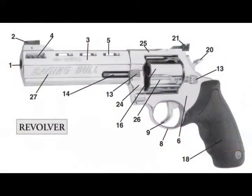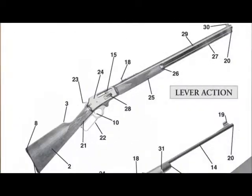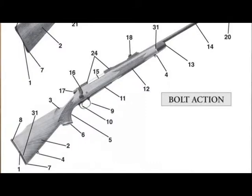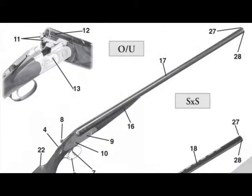A pictorial anatomy of firearms is also included. All the components of a revolver, semi-auto pistol, lever action rifle, bolt action rifle, semi-auto shotgun, and double barrel shotgun are pictured and identified. The anatomy of firearms is found within the front of the Blue Book of Gun Values.